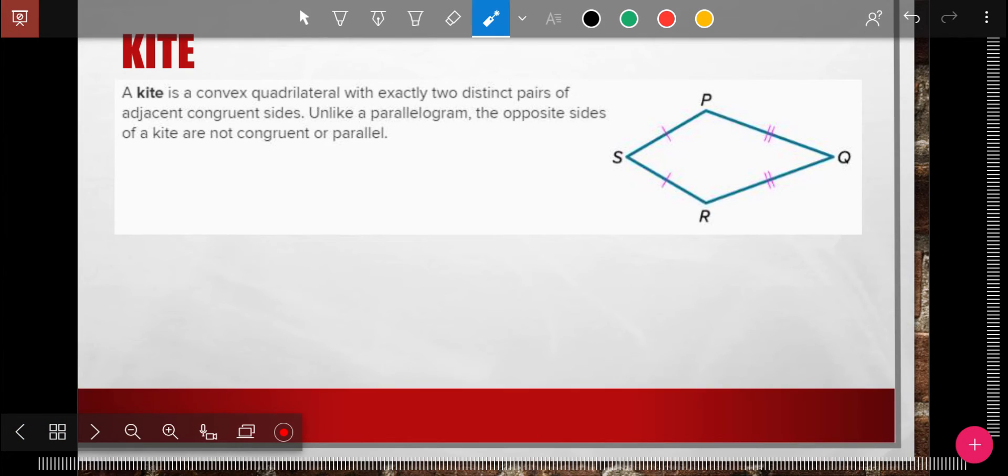What's a kite? All right, a kite has two distinct pairs of adjacent congruent sides. Two distinct pairs of them, right? It's very similar to a rhombus. In fact, a rhombus would be a particular type of kite.